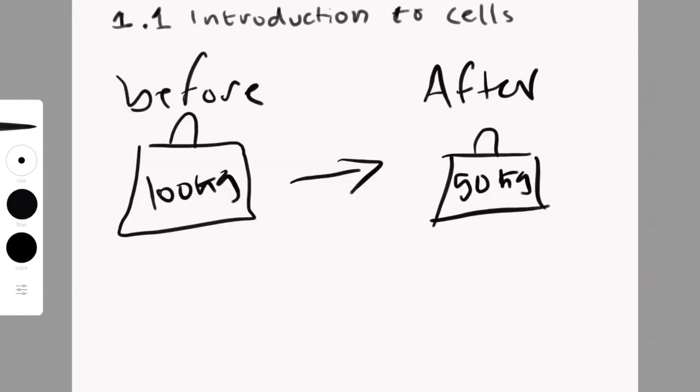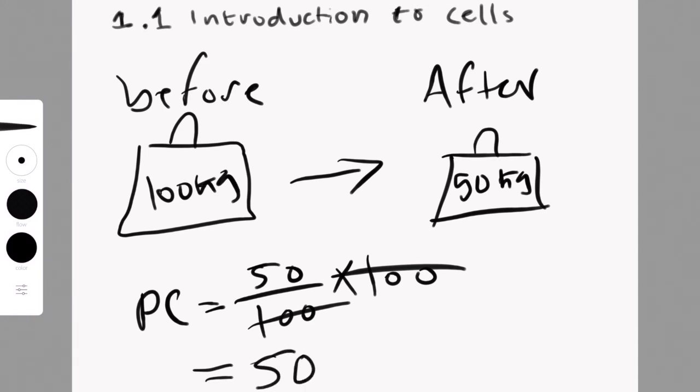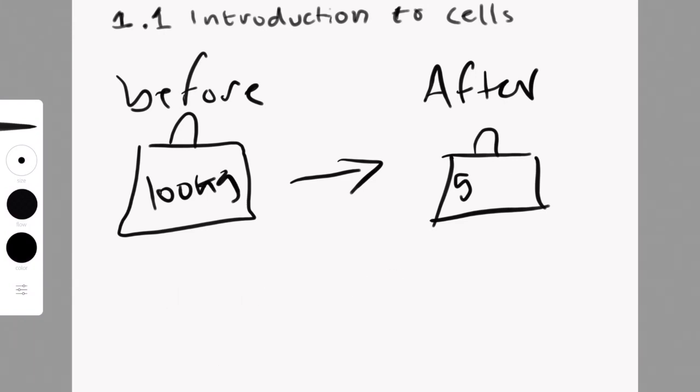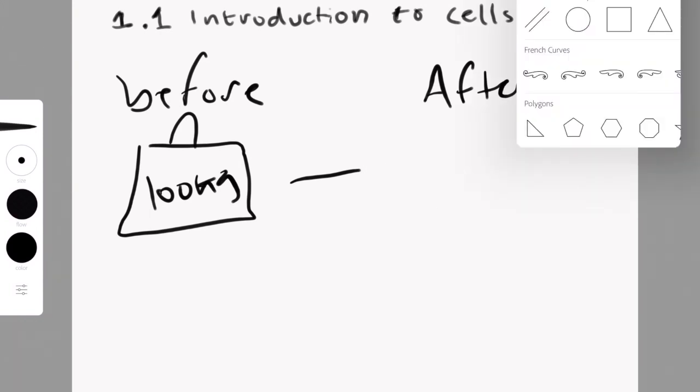For the next example for the percentage change, before a person weighed 100 kg and after they weighed 50. To do this with percentage change, you would essentially take the difference. What's the difference between 100 and 50? It's 50 kg. I don't mean the after, I mean the difference. You divide it by 100, because that's what the original value was, and then times 100 to get the percentage, which is 50%. Good for us. Now you all know how to do that. Great.